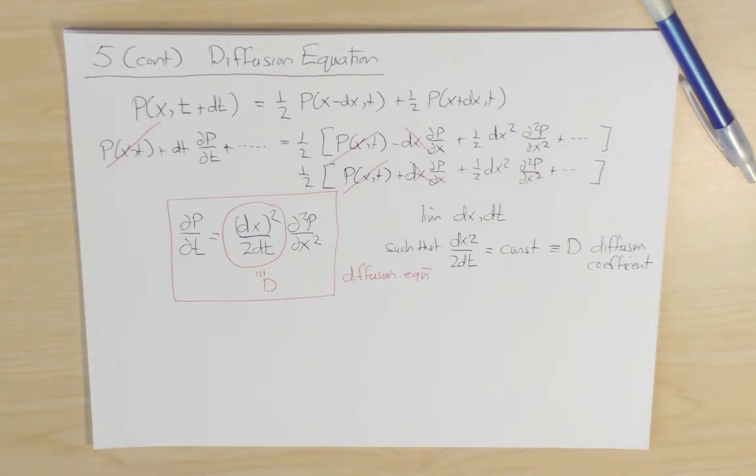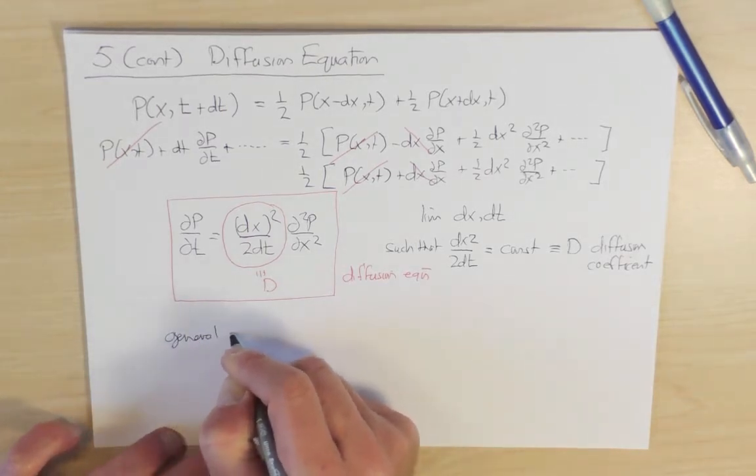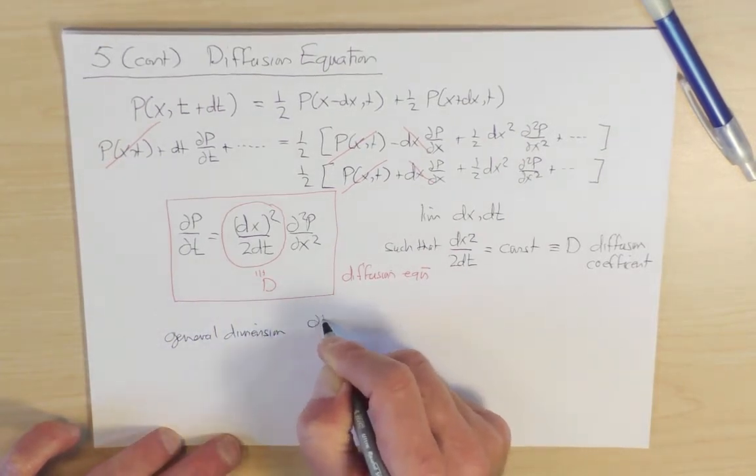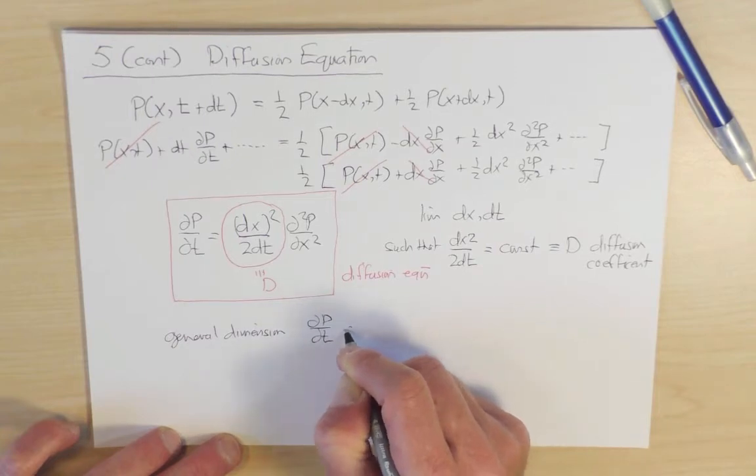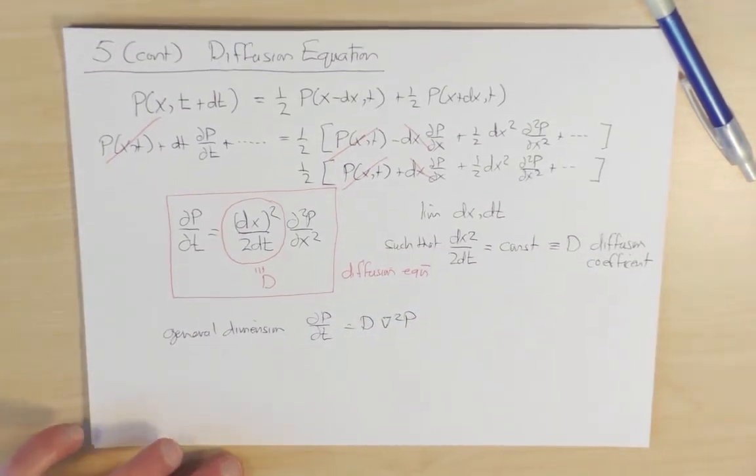Now, in general spatial dimension, the same considerations can be carried out. And one finds in general dimension the equation dp/dt is equal to D Laplacian of p. So that is the diffusion equation in general spatial dimensions.